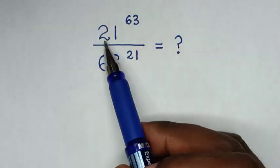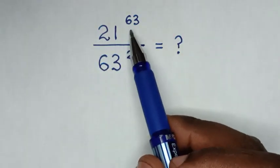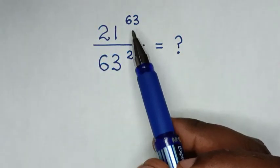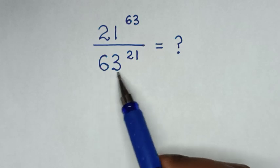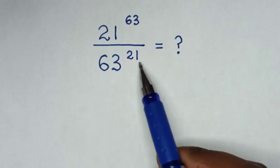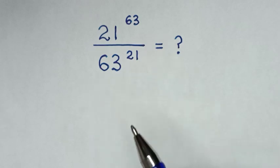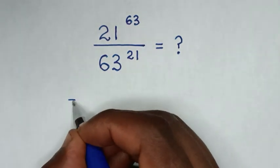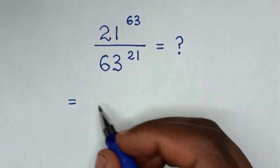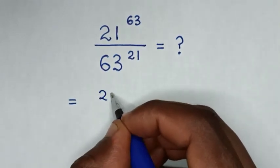Hello. How to solve 21 power of 63 divided by 63 power of 21. So it will be equal to 21 power of 63 divided by...